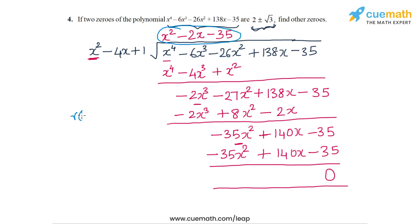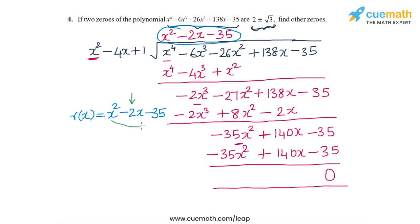So R(x) is the polynomial x squared minus 2x minus 35, and the zeros of R(x) are the remaining two zeros of P(x). To find the zeros of R(x), we can split the middle term. We need two numbers whose sum is minus 2 and whose product is 1 times minus 35, which is minus 35.